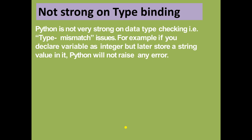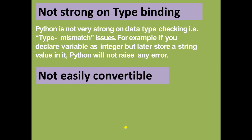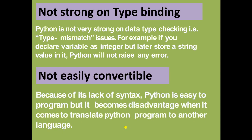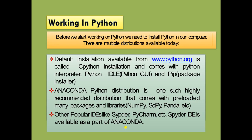Python is not strong on type binding — it is not strict about data type checking, so type mismatch issues can occur. For example, if you declare a variable as integer but later store a string value, Python will not raise any error. Also, due to its lack of strict syntax, it is not easily convertible when translating a Python program to another language.